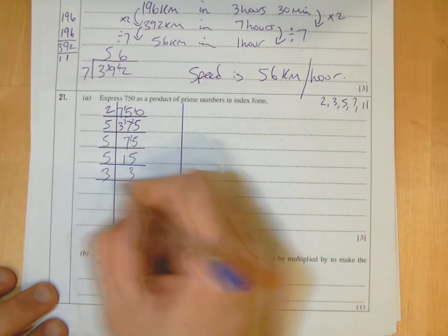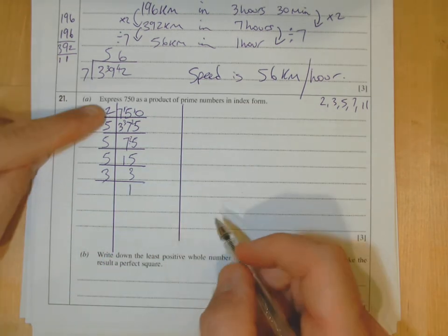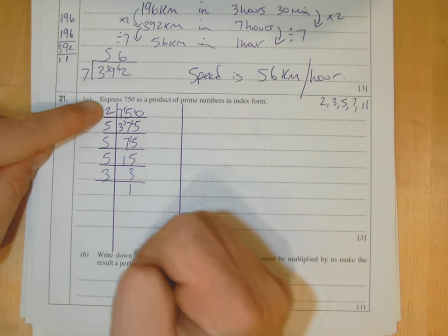Then of course 3 goes into 3 once, and when you've got 1 at the bottom you're done. The answer then will be, because it wants in index form, you've got to put it in order: 2 times 3.